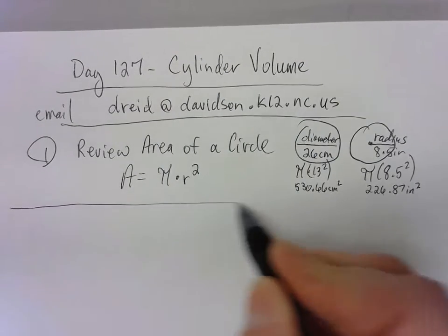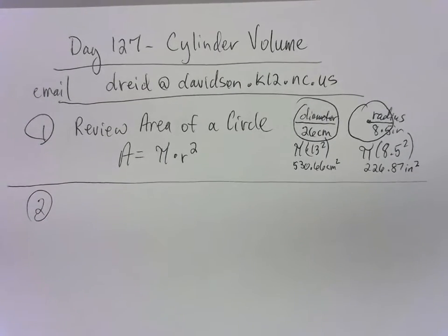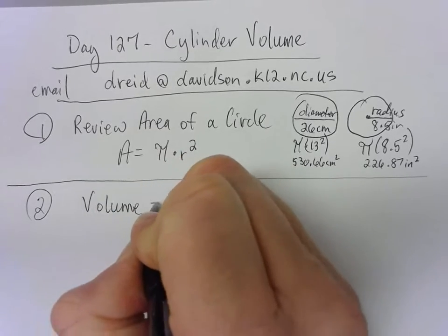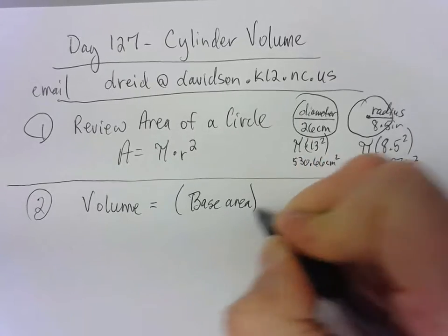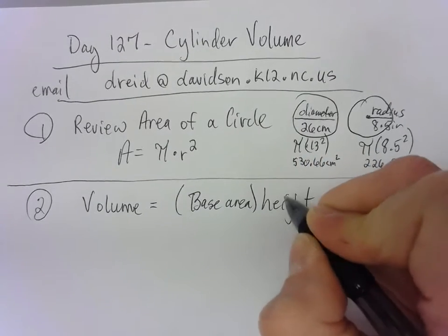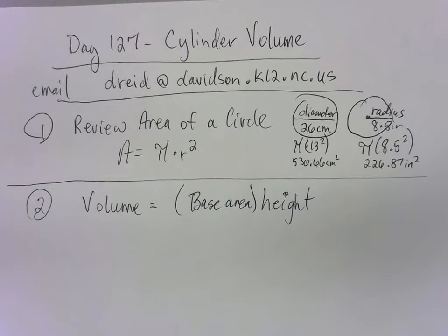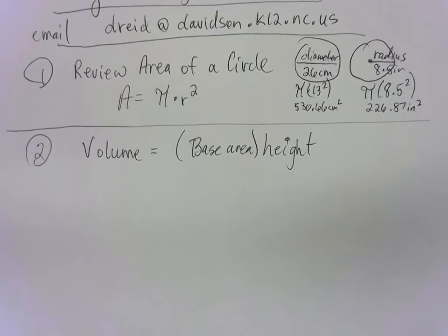Now that ties in with our volume formula. To get the volume of anything, you do base area times height. For a cylinder, the base is a circle, so you get the area of the circular base and then multiply it by the height of the whole thing. It's pretty simple — base area times height.